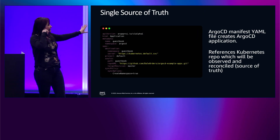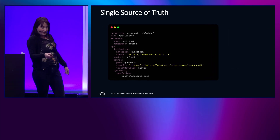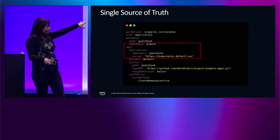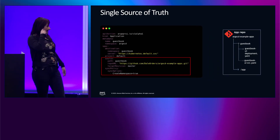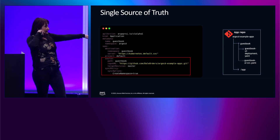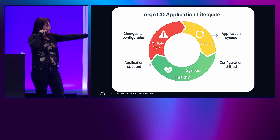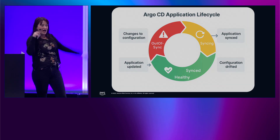Let's look at what a single source of truth looks like in practice. This is the Argo CD YAML file. In the first block, we define the Argo CD project, then provide the namespace and server, and finally the source — the repo URL that Argo CD is going to pull from, along with the path. The application lifecycle works as follows: the application is synced; if there is configuration drift, it shows as out of sync, and that sync is then automatically remedied by Argo CD — and we'll see that in the demo.